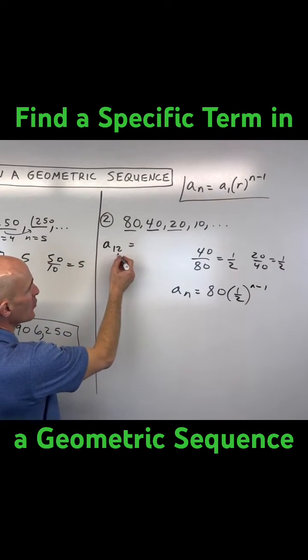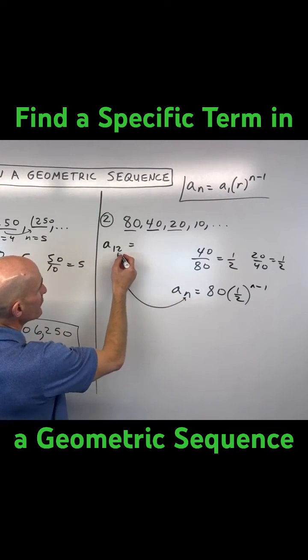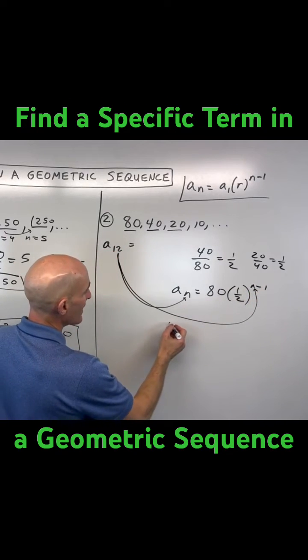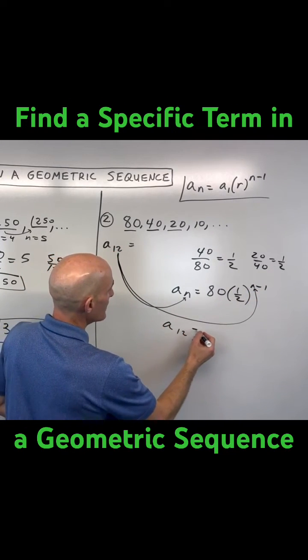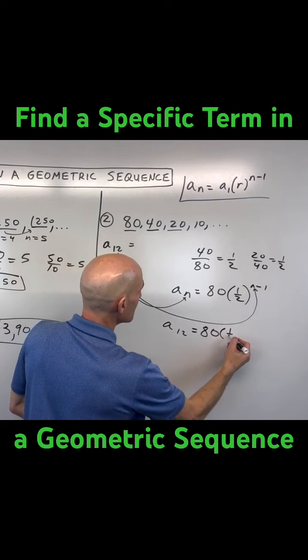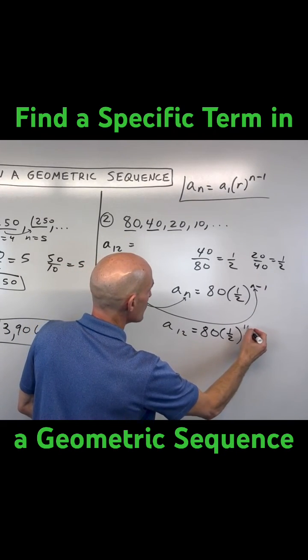So if we want to find a sub 12, we're going to put in 12 for n and simplify. So a sub 12 is equal to 80 times 1 half to the 12 minus 1, which is 11.